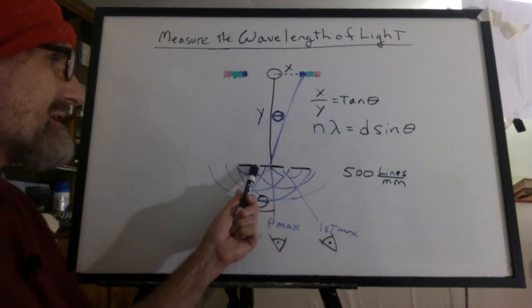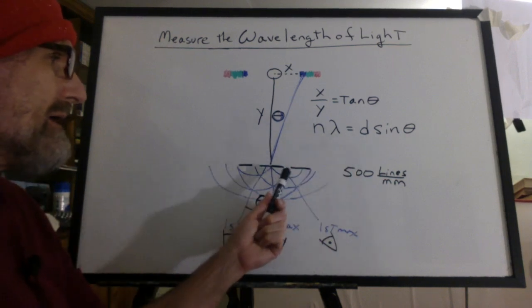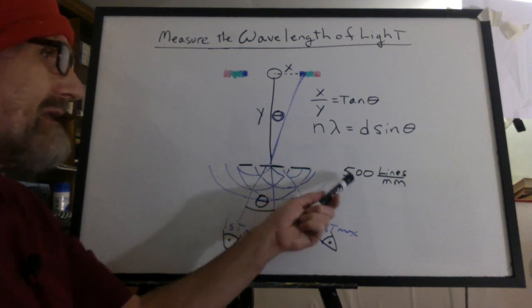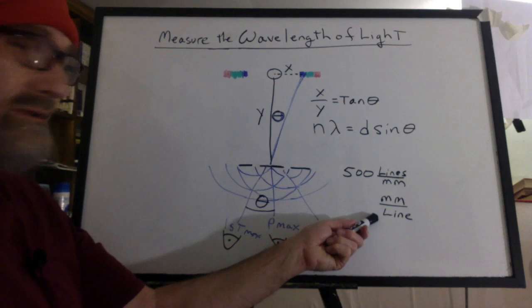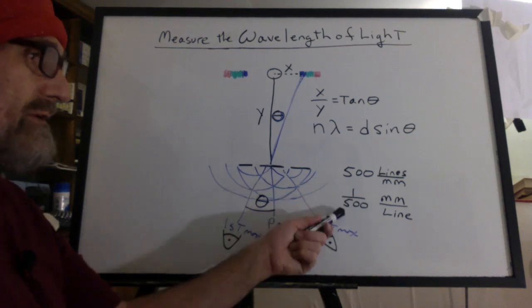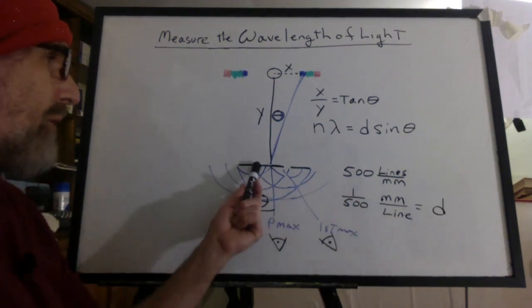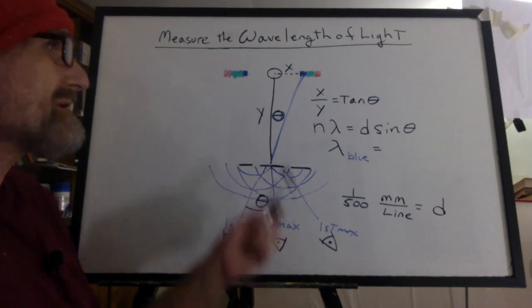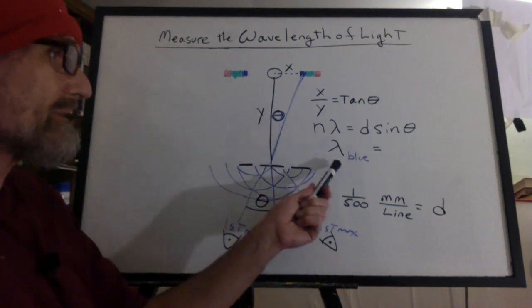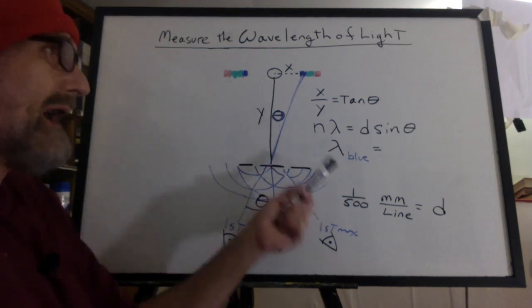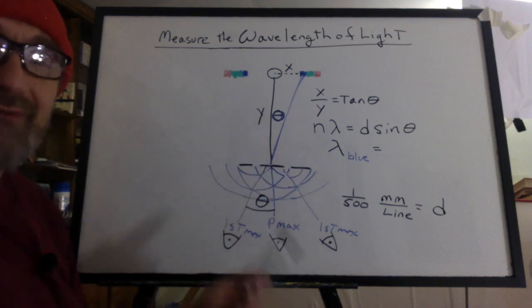That's got something to do with d. We need the distance from opening to opening. That means from line to line. Well, that means I need millimeters per line. So I have to invert this 500. And that's the distance from opening to opening. So now you need to take these measurements and go calculate the wavelengths of blue light. I'm not going to work it out for you because you haven't taken the measurements yet.